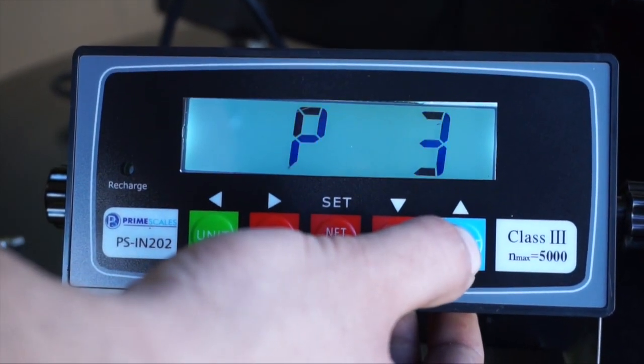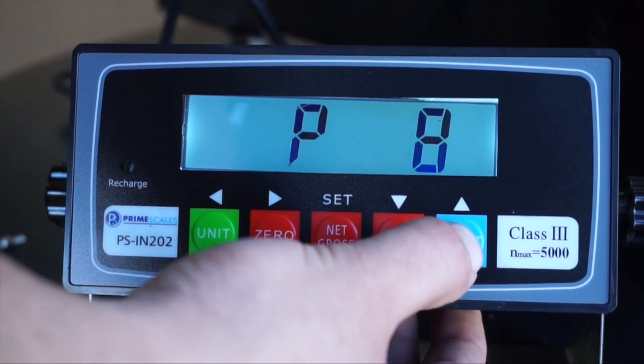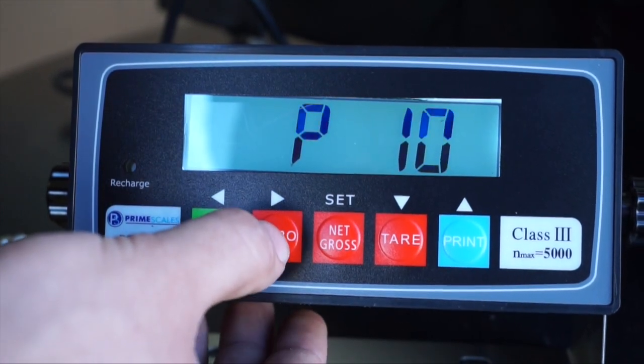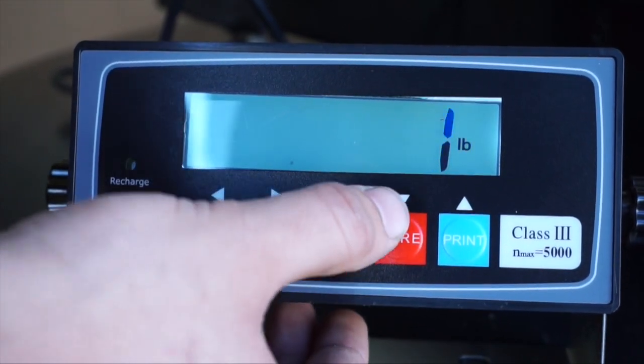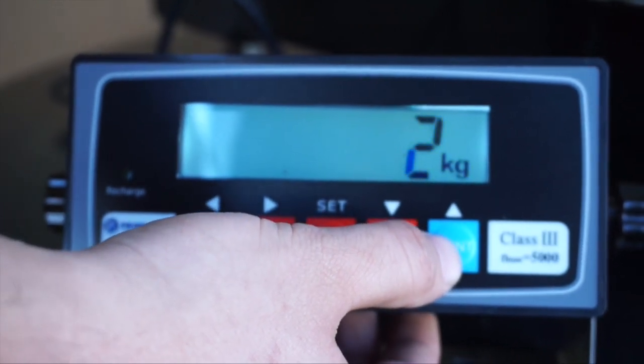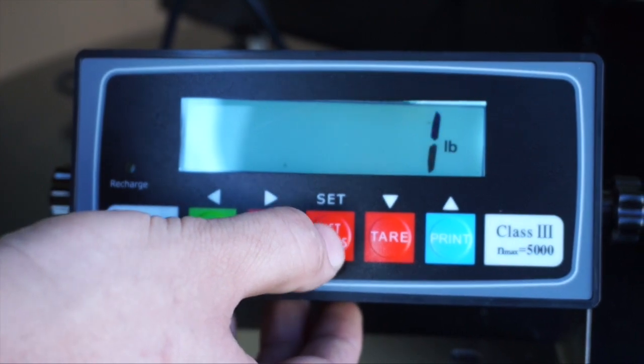Press the print button till you move up to the P10 or parameter 10. Press zero to enter. P10 sets scale to read in pounds or kilograms when turned on. Although you can switch unit anytime during weighing. Choose one for pound or two for kilogram and save setting by pressing net gross.